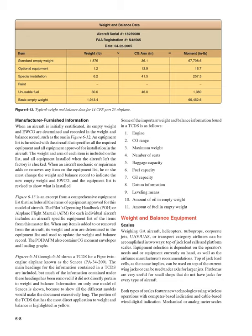Some important weight and balance information found in a TCDS includes: (1) Engine, (2) CG Range, (3) Maximum Weight, (4) Number of Seats, (5) Baggage Capacity, (6) Fuel Capacity, (7) Oil Capacity, (8) Datum Information, (9) Leveling Means, (10) Amount of Oil in Empty Weight, and (11) Amount of Fuel in Empty Weight.